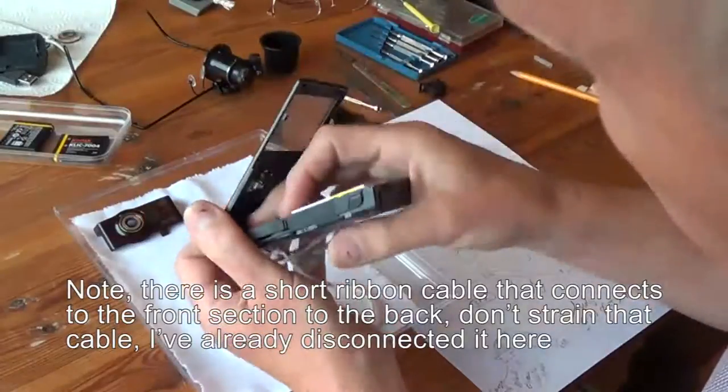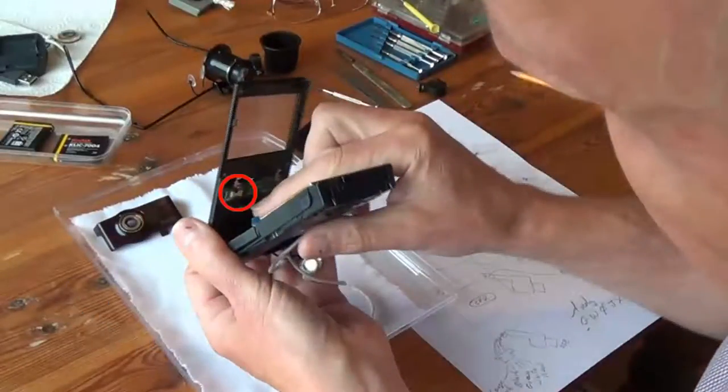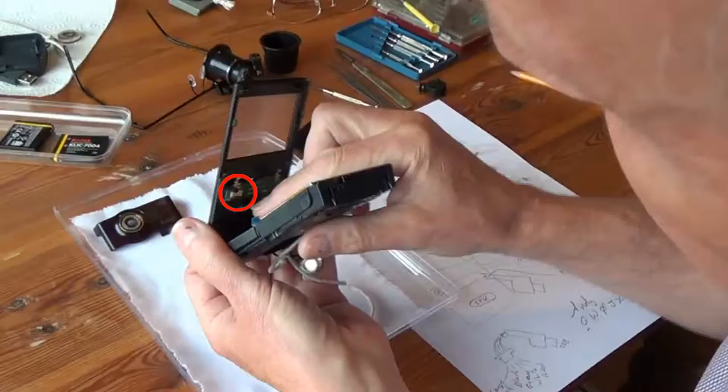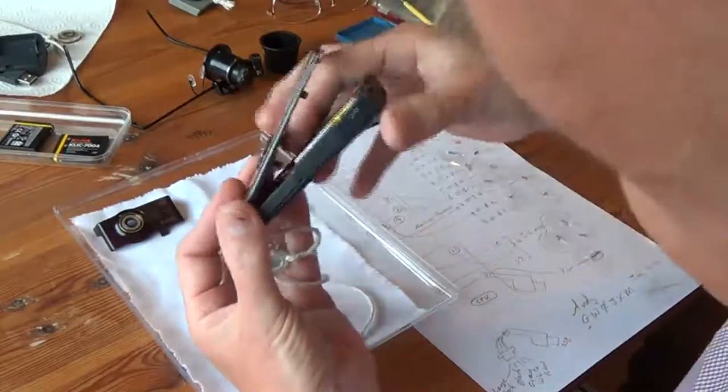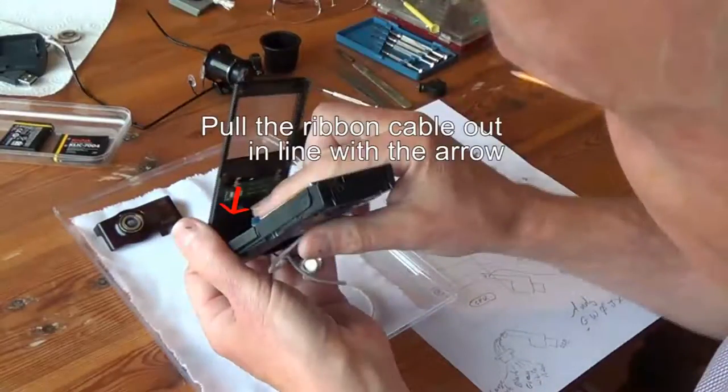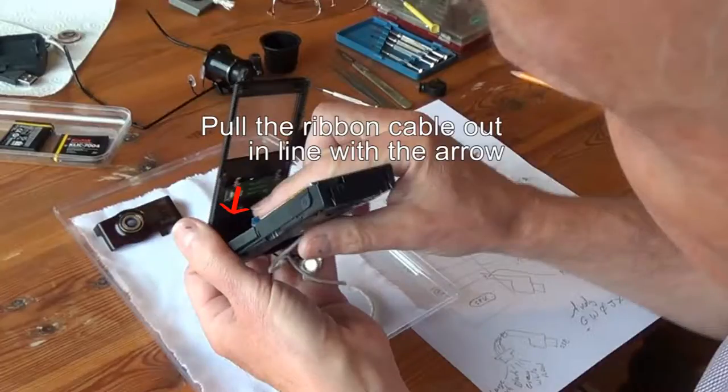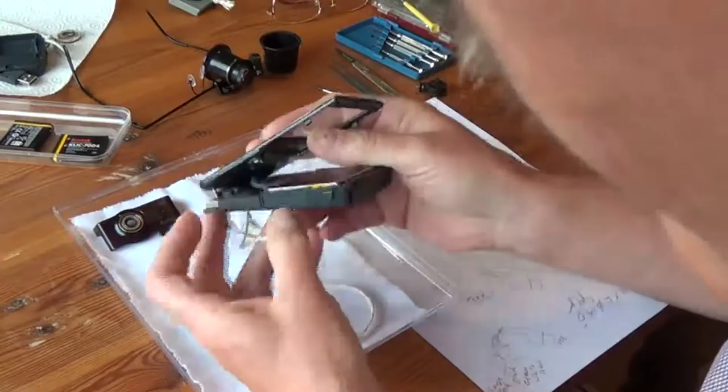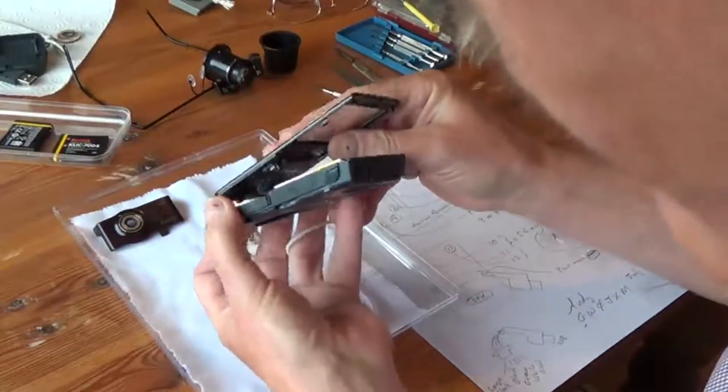That ribbon cable is held in a socket there and what you need to do is gently pull that ribbon cable out. That is really quite tricky because there's not a lot of room to get your fingers in to do anything.